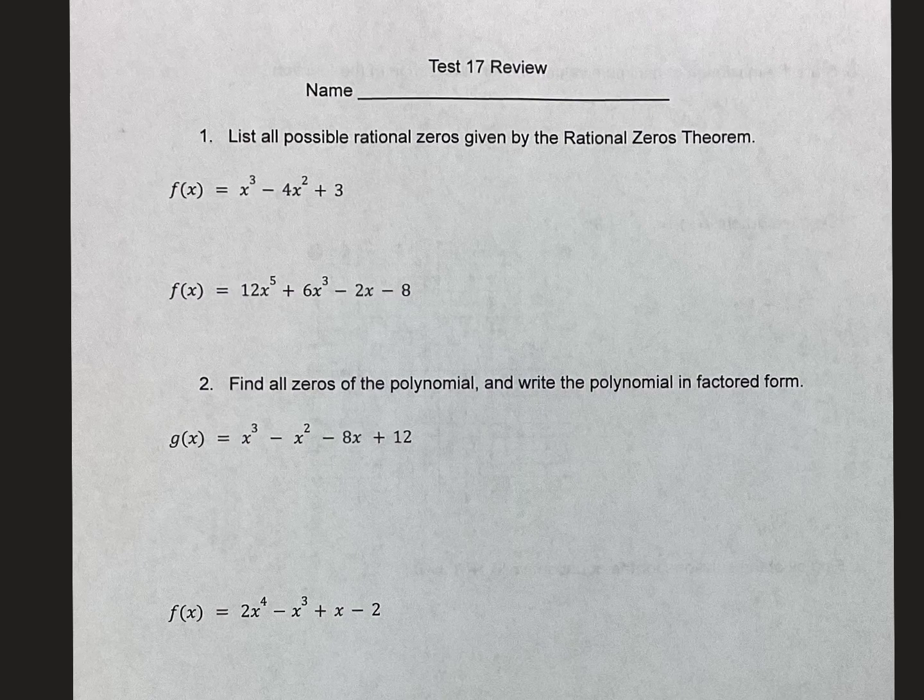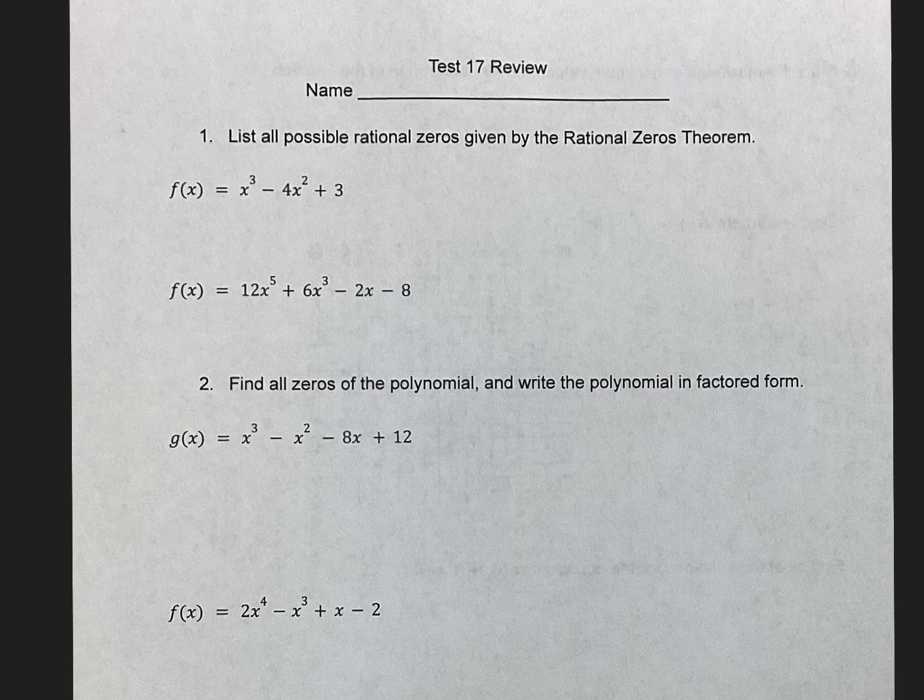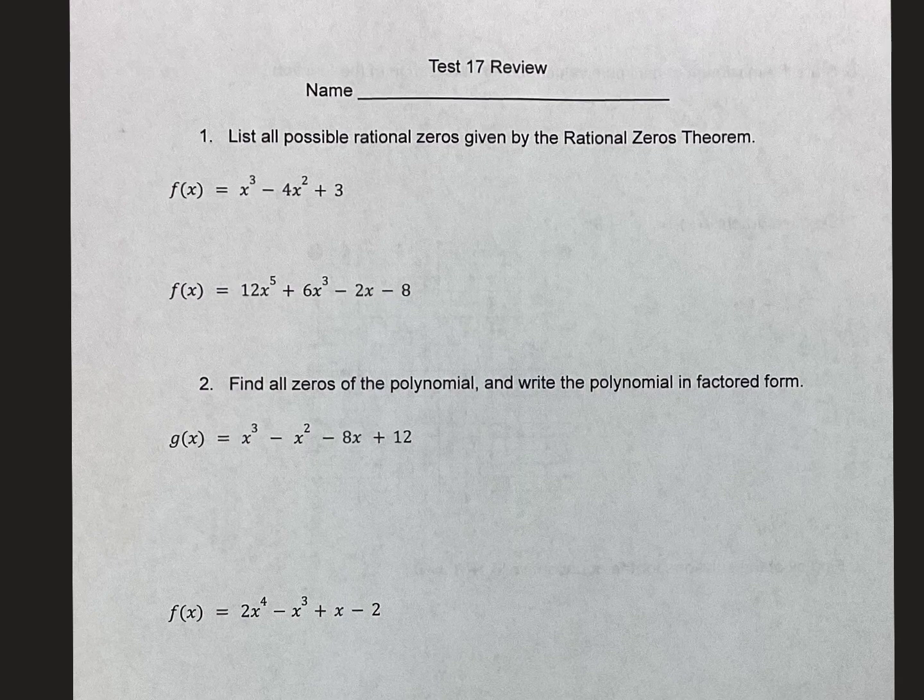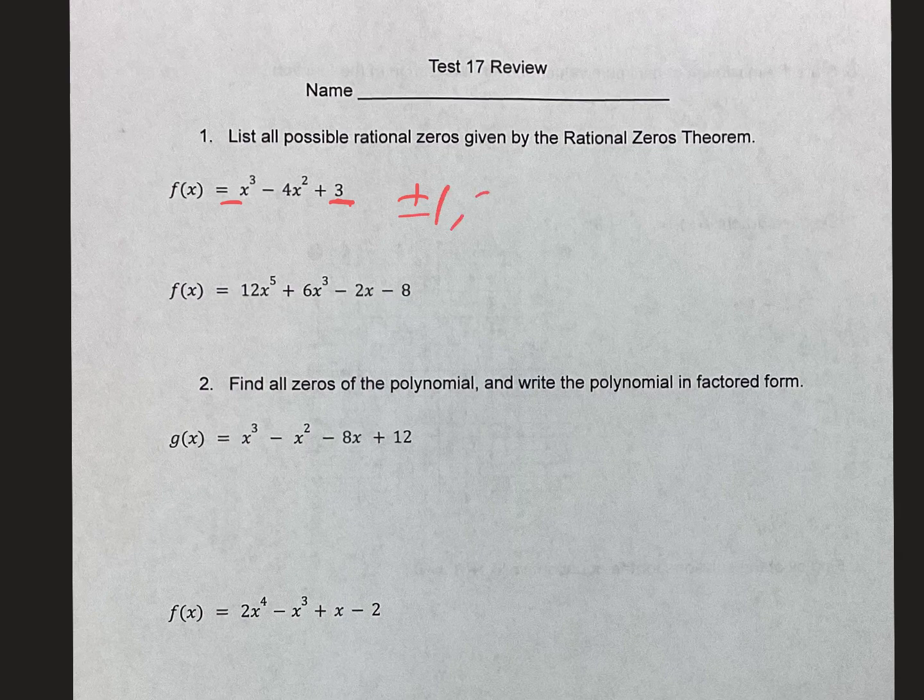Hey guys, let's look at this review real quick. Number one has two parts, list all the possible rational zeros given by the Rational Zeros Theorem. Remember how you do that? You take the factors of the last number and put them over all the factors of the first number. So luckily the first number is 1, so I'm going to put 1 over 1 and 3 over 1 because those are the factors of 3.